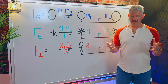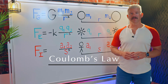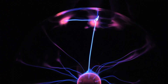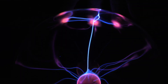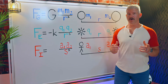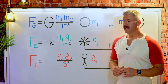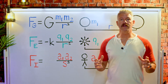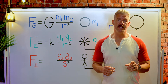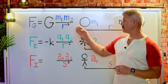Similar to Newton's Law of Universal Gravitation, Coulomb's Law describes the force of repulsion or attraction between two charged objects. Named after the French physicist Charles Augustin de Coulomb, it plays a crucial role in our understanding of electrical interactions. In 1767, English chemist Joseph Priestley was among the first to suggest that electric force followed an inverse square law similar to gravity.